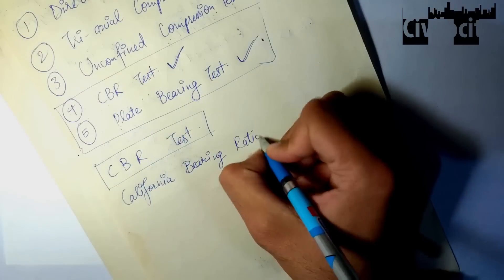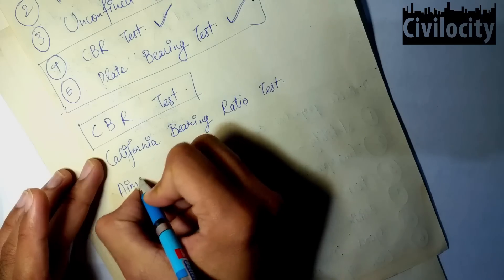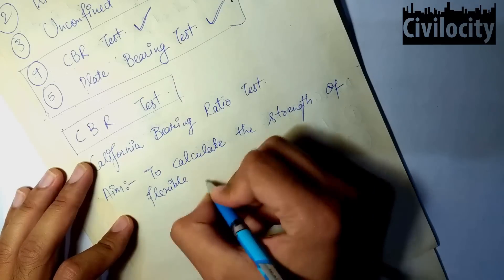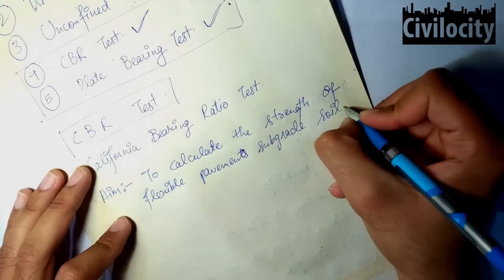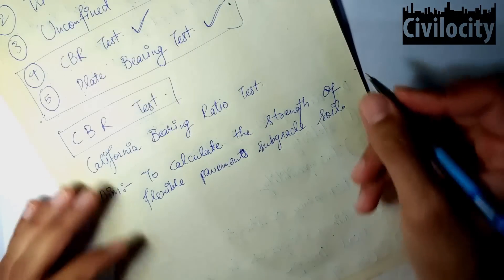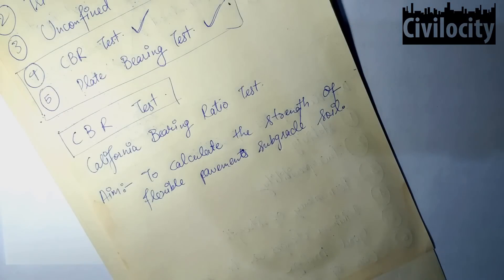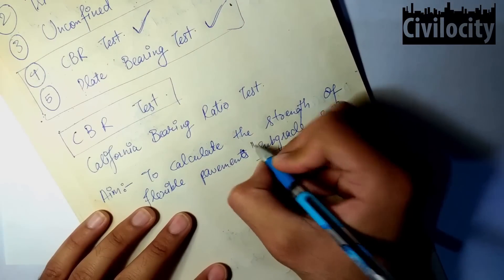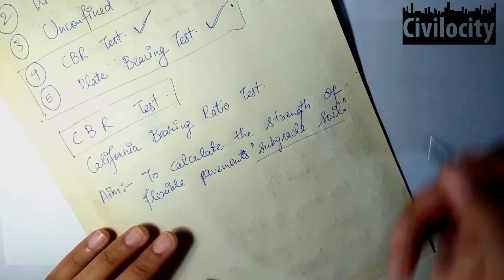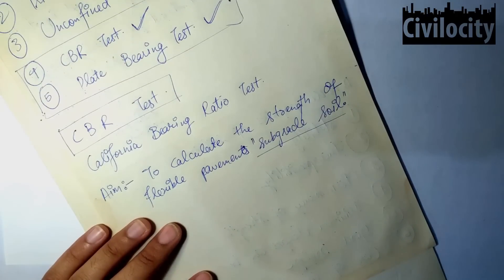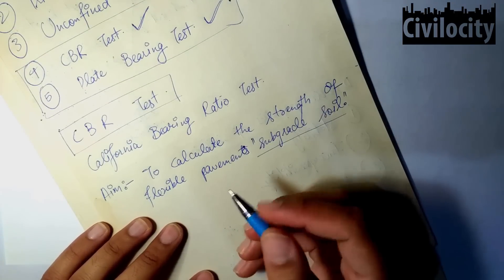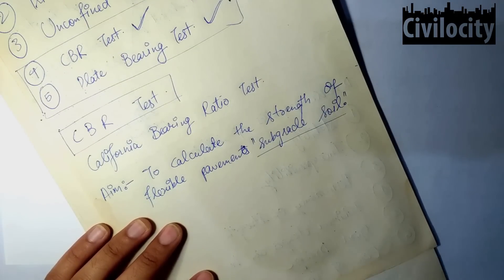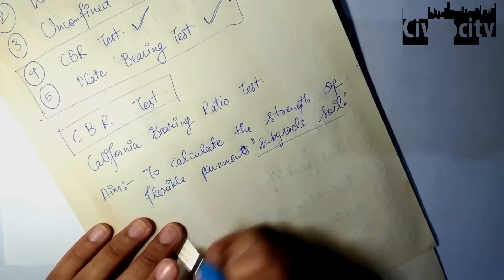The aim of the California Bearing Ratio test is to calculate the strength of the subgrade soil of flexible pavements. This test can also be used for other pavement materials, but our main focus is on soil. This test has been standardized by the Bureau of Indian Standards and it is an empirical method, so all procedure requirements must be carefully followed.